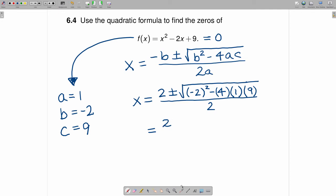That turns out to be 2 plus or minus, and this term right here will be 4, and this will be negative 36, and 4 minus 36 is negative 32. So this becomes 2 plus or minus the square root of negative 32 divided by 2.